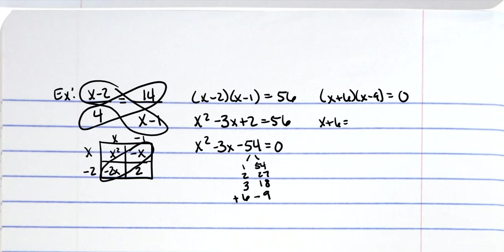So x plus 6 equals 0, x minus 9 equals 0. We subtract 6 from both sides, so x is negative 6. We add 9 to both sides, so x is 9. And since this is just a regular algebra problem, these are your answers.